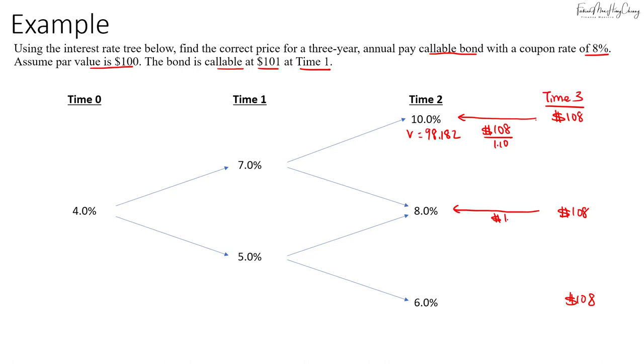For this case we have $108 discounted at 8%, which gives us $100. Then for $108, we discount by 6% for the lower node. That will give us a value of 101.887.